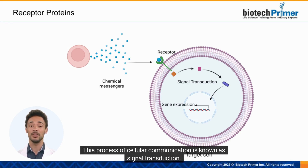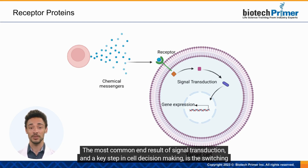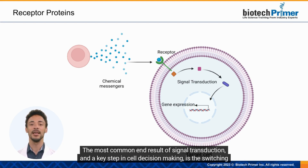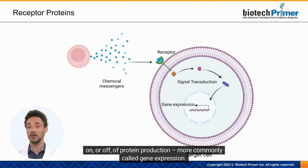This process of cellular communication is known as signal transduction. The most common end result of signal transduction, and a key step in cell decision-making, is the switching on or off of protein production, more commonly called gene expression.